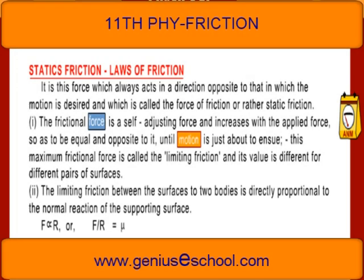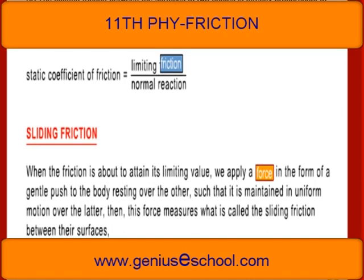Second law: The limiting friction between the surfaces of two bodies is directly proportional to the normal reaction of the supporting surface. F is directly proportional to R, or F/R = μ. The static coefficient of friction is equal to limiting friction divided by normal reaction.